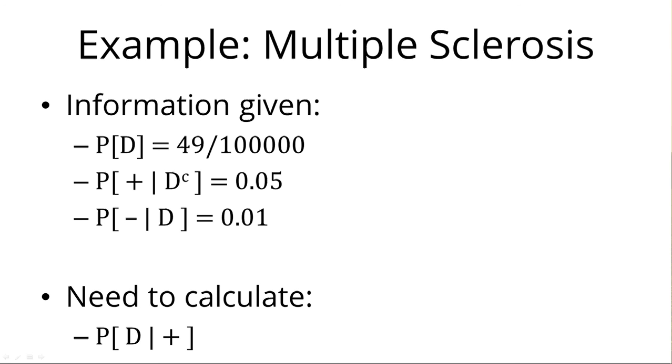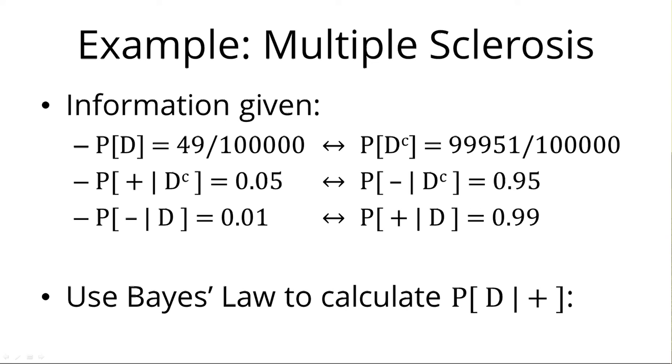So those paragraphs we've just distilled into these four equations. We're given the probability of the disease is 49 per 100,000. We're given that the false positive rate is 5%, and the false positive rate is the probability of getting a positive, given that you're negative for the disease. And we are given that the false negative rate is 1%. False negative rate is the probability of you getting a negative, given that you've got the disease. And we were asked, given that she tests positive, what's the probability she has the disease? Well, we don't see a probability of D given positive anywhere up here. So we know that we're going to have to use Bayes' law to flip the probability.